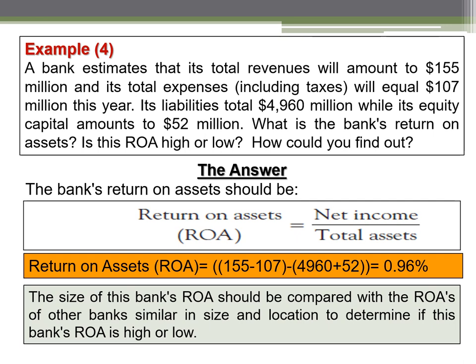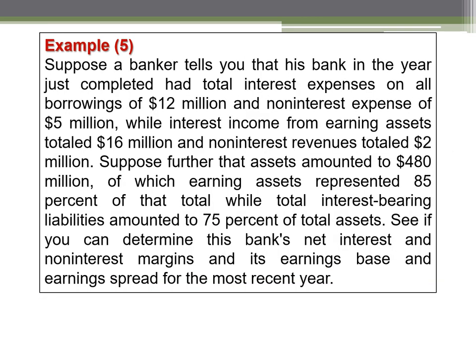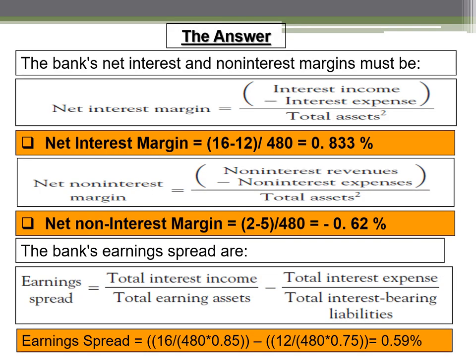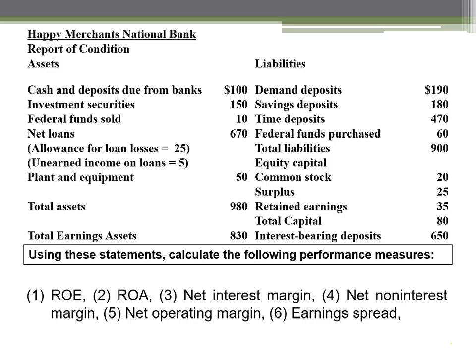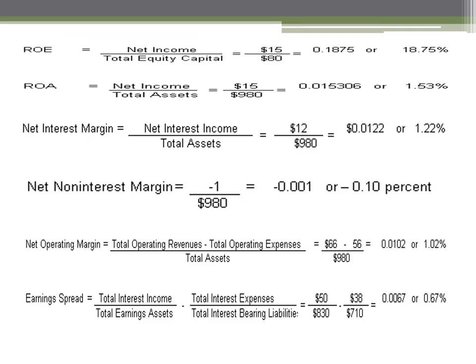Students are encouraged to solve Examples 4, 5, and 6 independently and match their answers to the provided solutions. Example 6 requires calculating ROE, ROA, net interest margin, net non-interest margin, and net operating margin, with answers provided in the slides for self-correction.